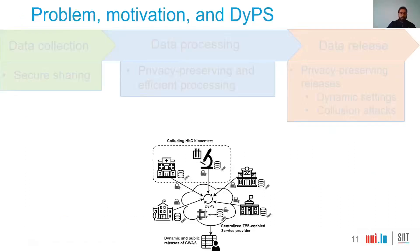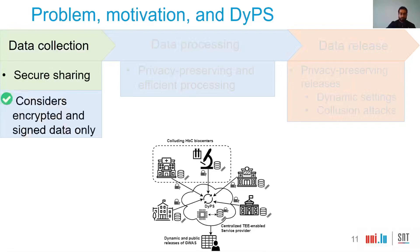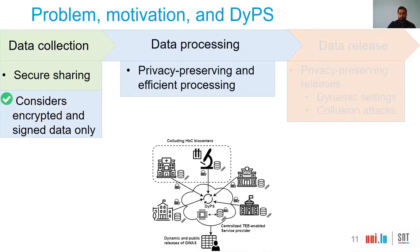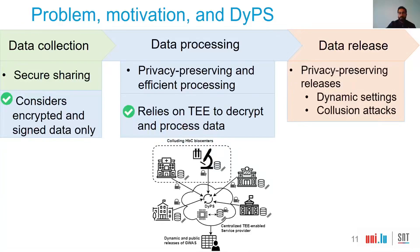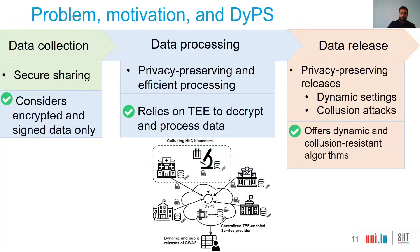This slide summarizes the problem, motivation, and our contribution: DIPs. During the data collection step, we need secure sharing of genomic data, and for that DIPs uses only encrypted and signed data. In the data processing step, we need privacy-preserving and efficient processing, so DIPs relies on trusted execution environments to decrypt and process the data. On the data release step, we need privacy-preserving releases in dynamic settings that also cope with collusion attacks, and for that DIPs offers dynamic and collusion-resistant algorithms.